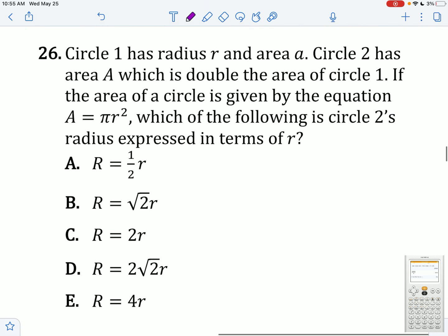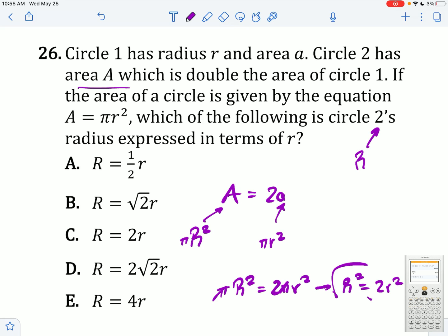Circle 1 has radius r and area a. Circle 2 has area a which is double the area of circle 1. If the area of a circle is given by this equation, which of the following is circle 2's radius represented in terms of r? Circle 2's radius is capital R. I can substitute π R² for here and π lowercase r² for there. I end up getting π R² equals 2π r². Divide both sides by π. R² equals 2r². Square root both sides. R equals r√2.